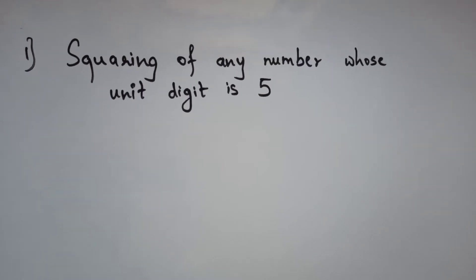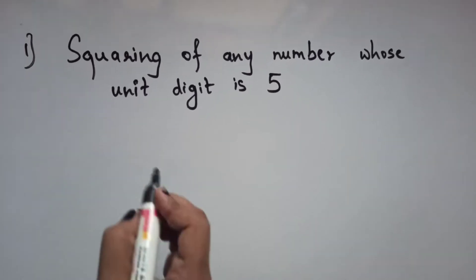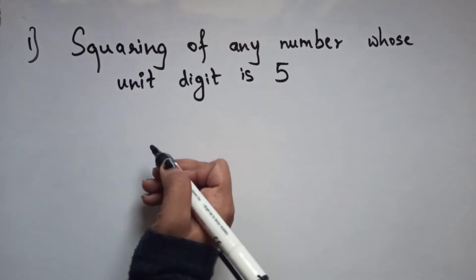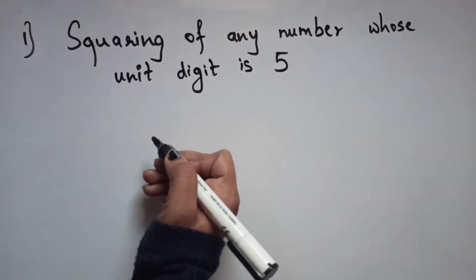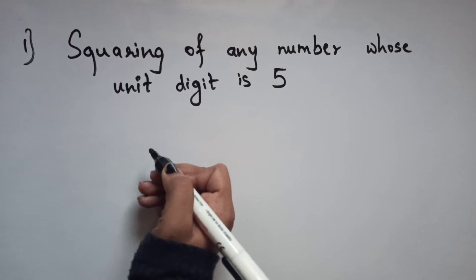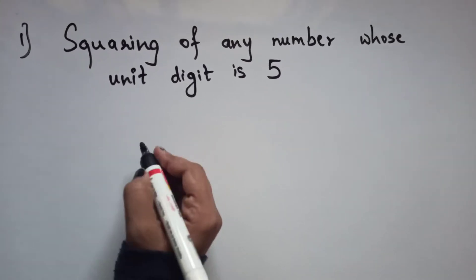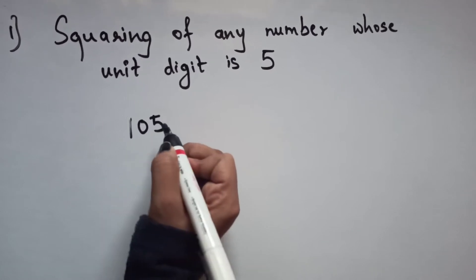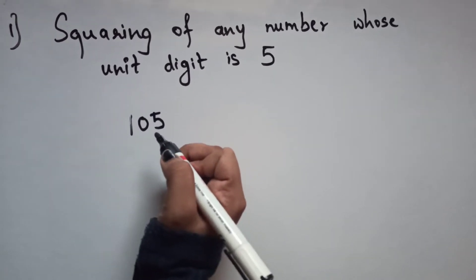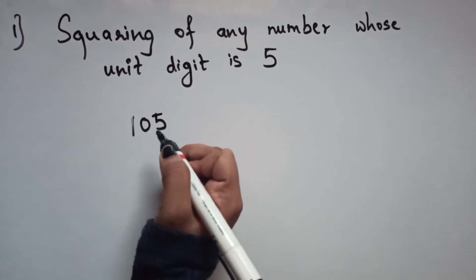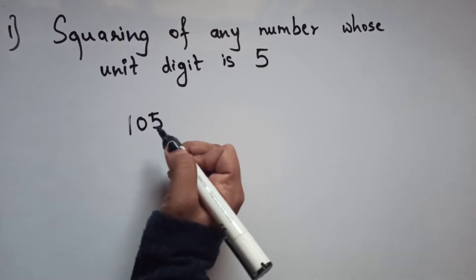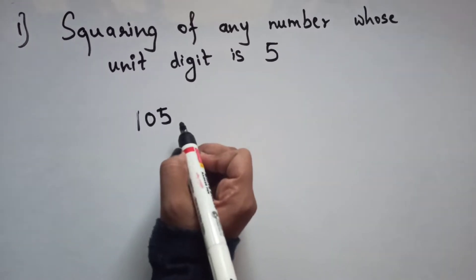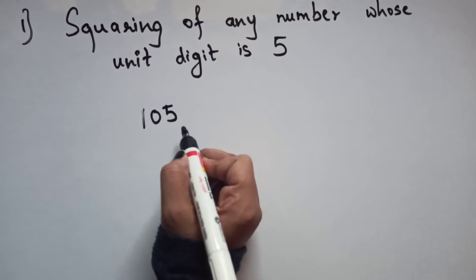The square of 5 — you'll quickly answer 25. The square of 10 — you'll quickly answer 100. But if I ask you the square of 105, it won't be as easy. You'll take some time to do the conventional calculations, so I'll help you with a trick.